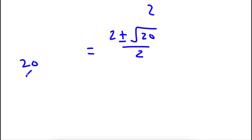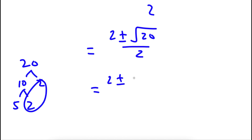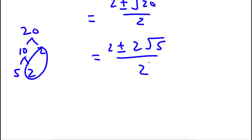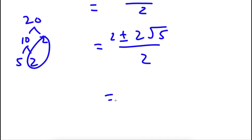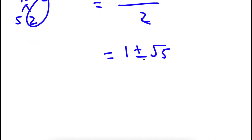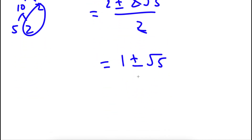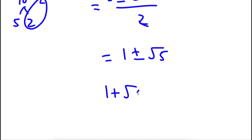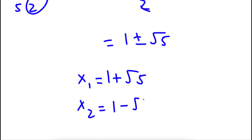Now the square root of 20 — 20 can be simplified into 10 times 2, and 10 can be simplified into 5 times 2. So 2 is going to be my outside number and 5 is going to be my inside number, giving 2 plus or minus 2 root 5 over 2. If I divide by 2, I get 1 plus or minus the square root of 5, because 2 divided by 2 is 1 and those cancel out. So my two solutions are 1 plus the square root of 5, and 1 minus the square root of 5.